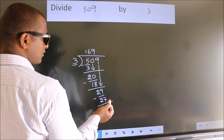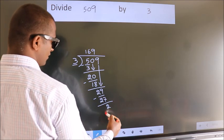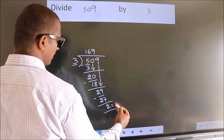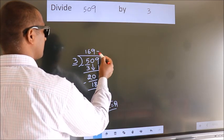No more numbers to bring it down. So, we stop here. This is our remainder. This is our quotient.